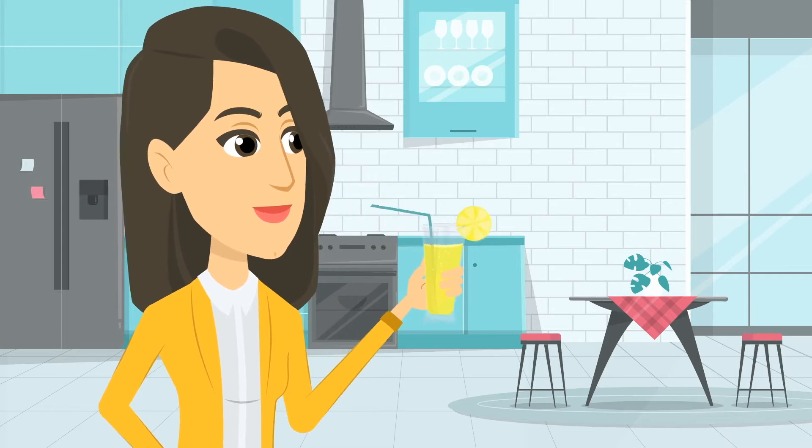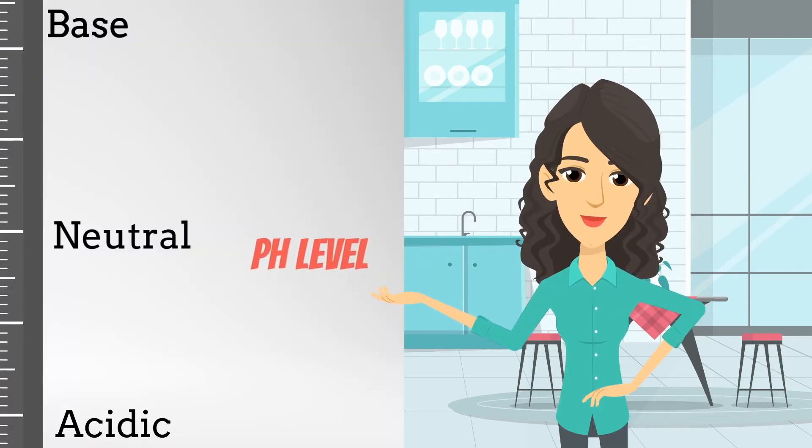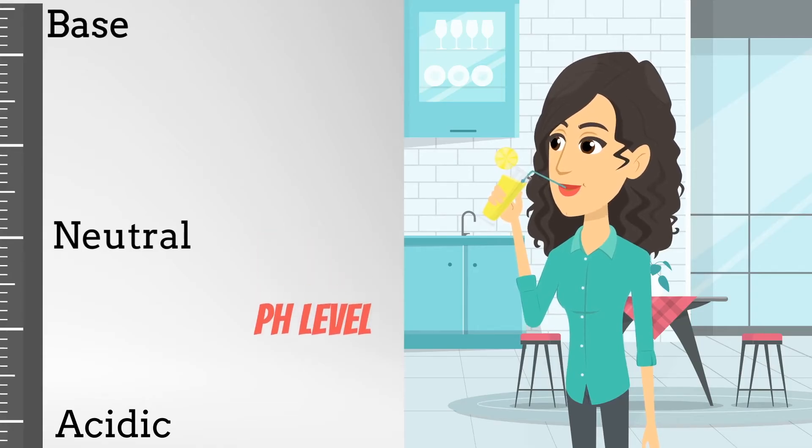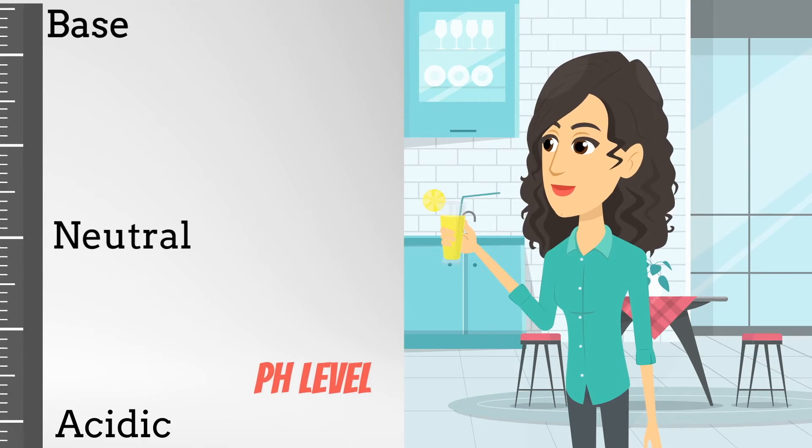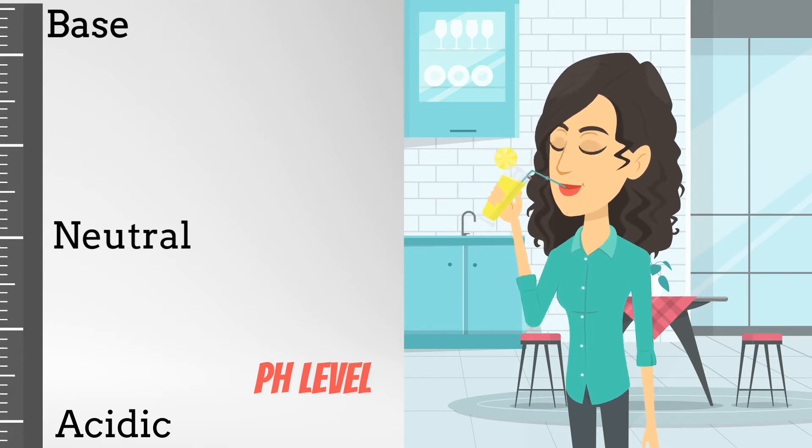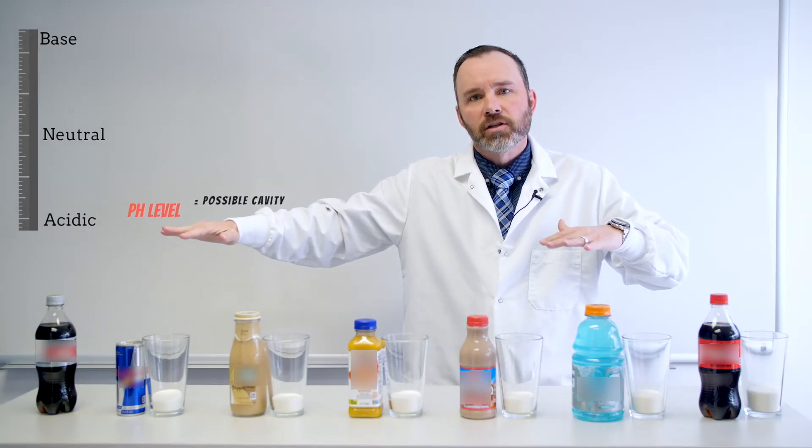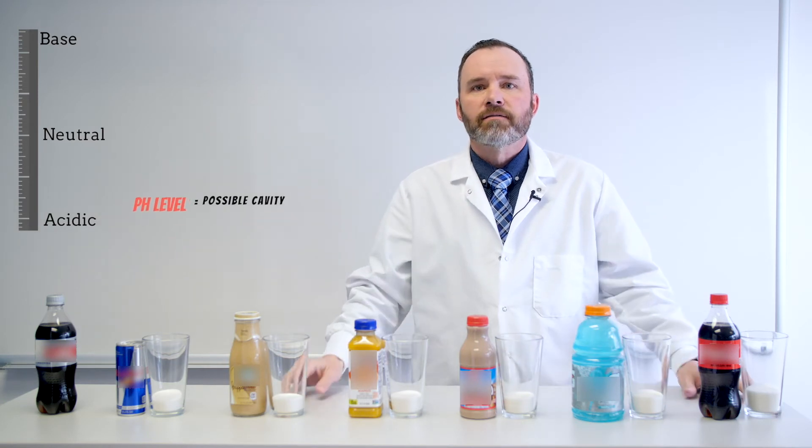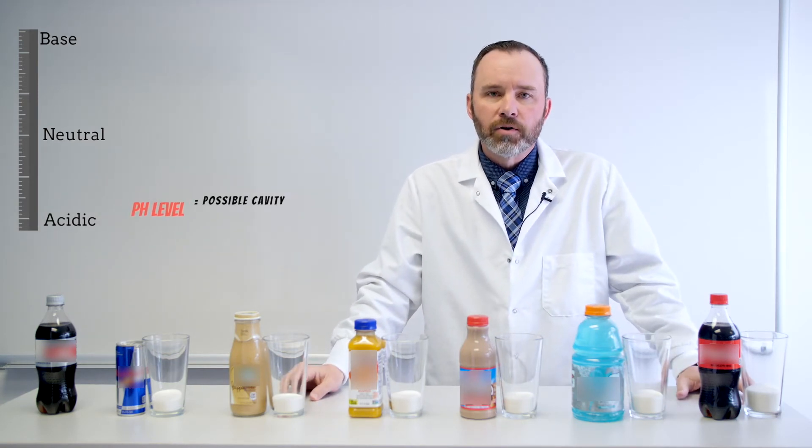Normally our oral cavity lives in this healthy neutral pH environment. But when we eat or drink things that are acidic, the pH drops. And then the length of time that that pH is low, that creates the environment where you can get a cavity.